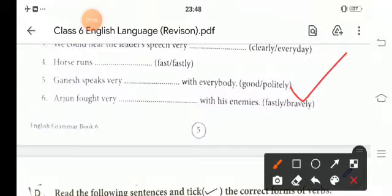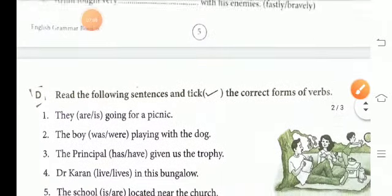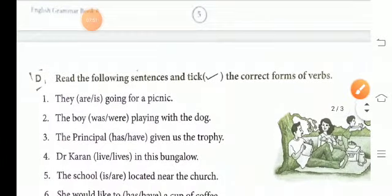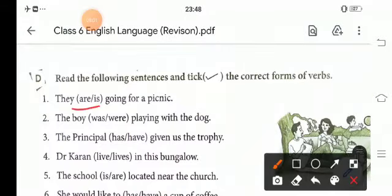Now, we move to our next exercise that read the following sentences and tick the correct form of verbs. They, the words are, are, is going to picnic. So, here is they. It is they, then plural. They are going for picnic.